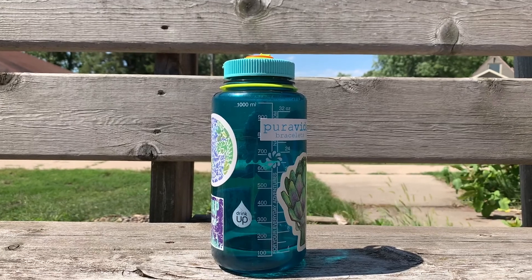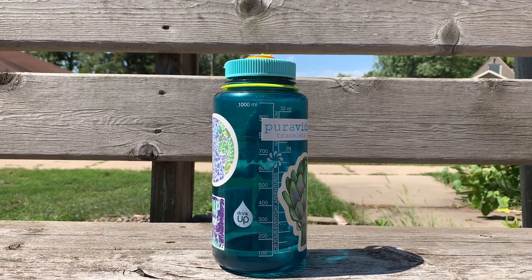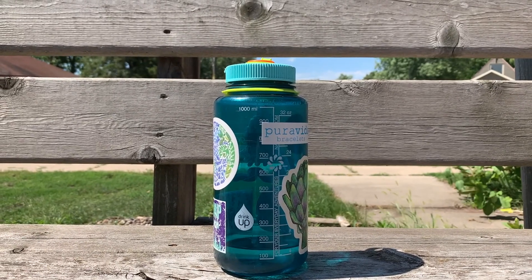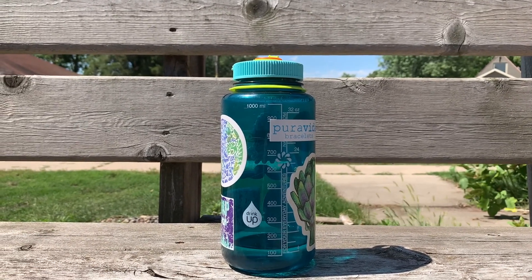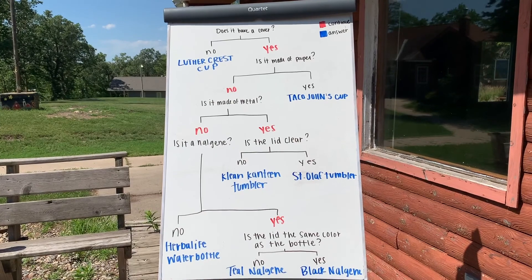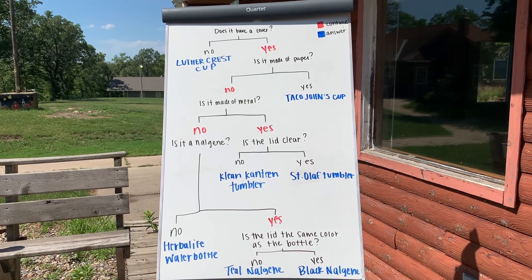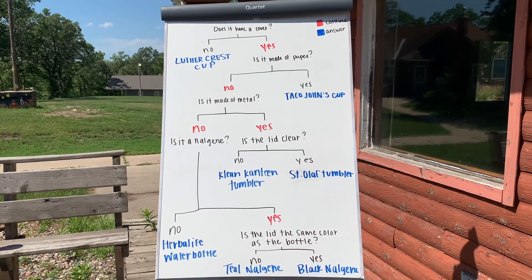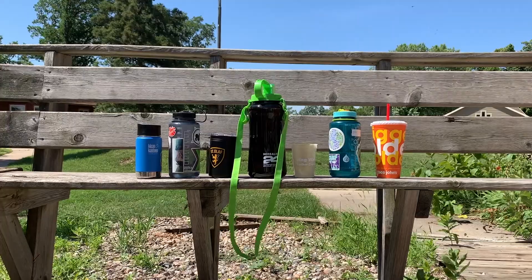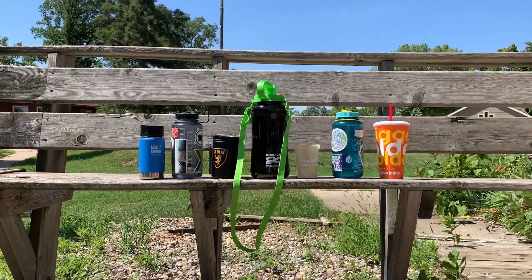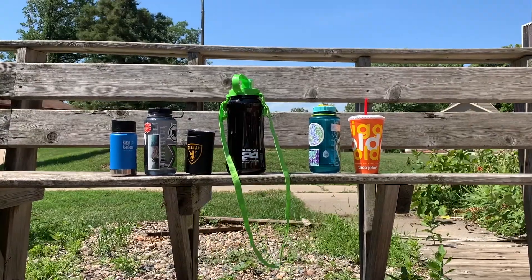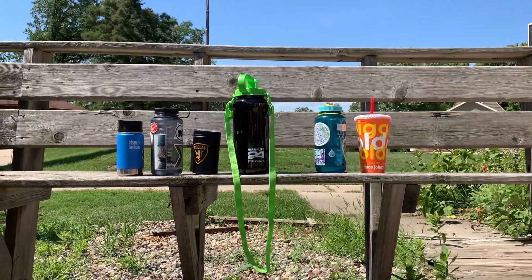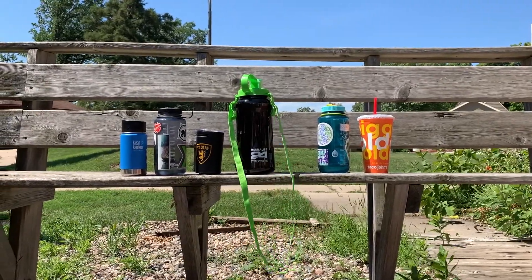We're trying to identify this item because we're not sure what it is. We'll start at the top with our first question: Does it have a cover? Yes — so we'll remove the items that don't have a cover.